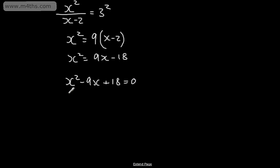This looks like it's going to factor, we're going to have now x minus 3 multiplied by x minus 6 is equal to 0. We can say from here x is going to be equal to 3, or x is going to be equal to 6.